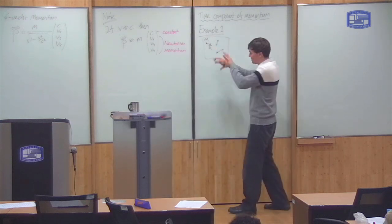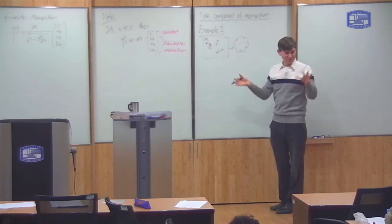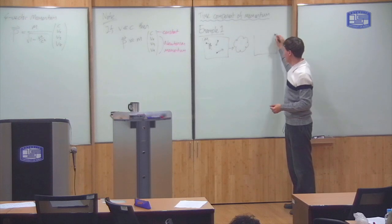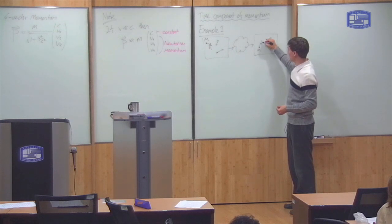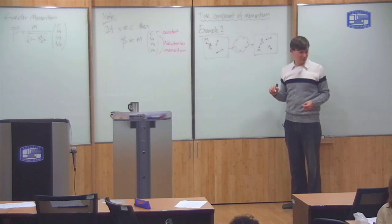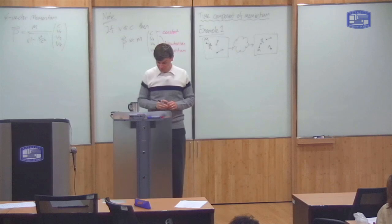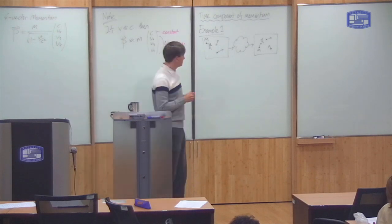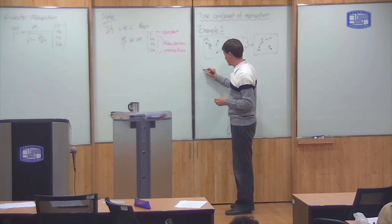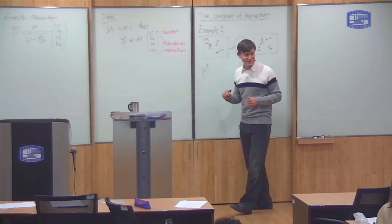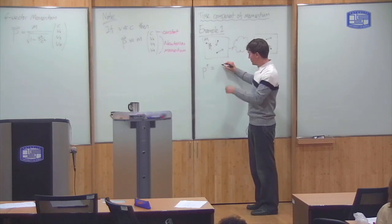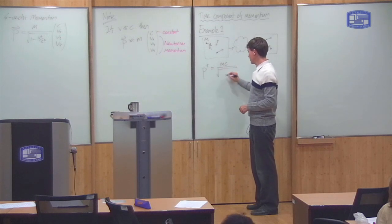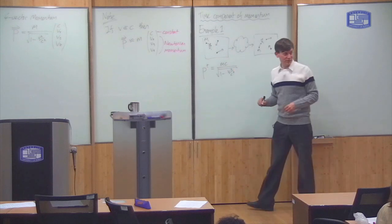So I have this system of particles, then in the meantime something happens — they interact in some way. Some time later, I look at the same system of particles and find that they've moved around a bit. I assume that the masses have not changed, but the velocities may have changed. So what is the time component of momentum? The time component Pt is, from that equation, m times c divided by the square root of 1 minus v squared over c squared.